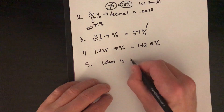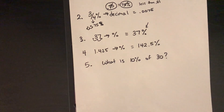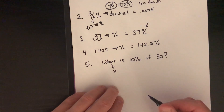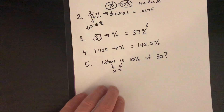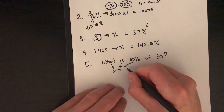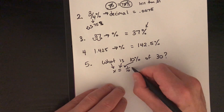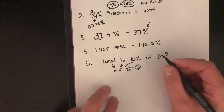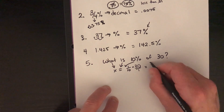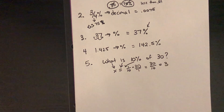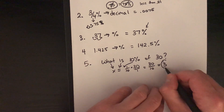Number 5: what is 10% of 30? Where you see 'what,' put a variable; 'is' means equals; 10% written as a fraction is 1/10; 'of' means multiply; times 30. So the answer equals 1/10 × 30 = 30/10 = 3. Ten percent of 30 is the same as one-tenth of 30, which is 3.